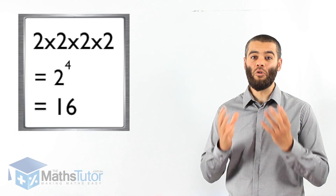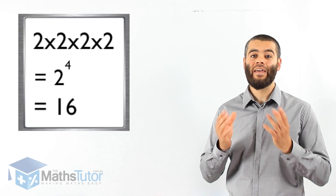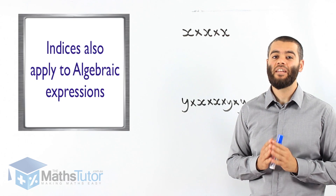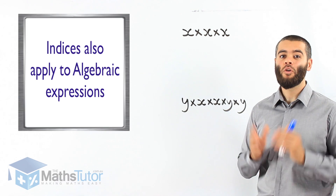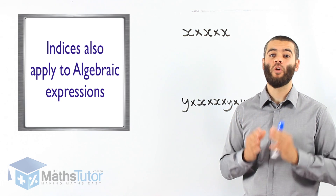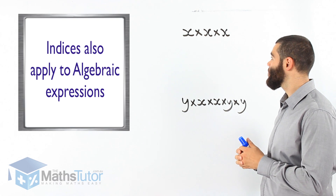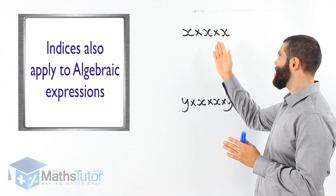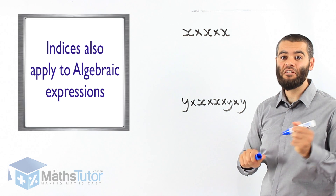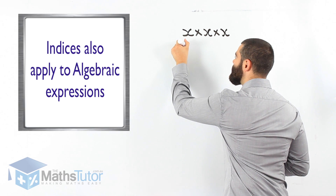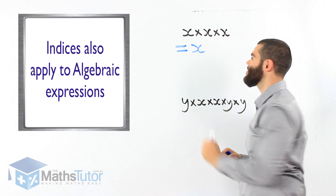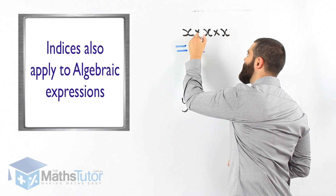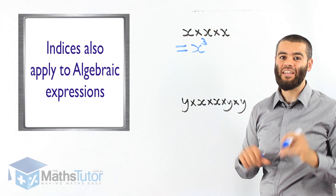Now let's do some examples that also involve algebra and pronumerals. We follow the same rules. Looking at this example: x times x times x. We are going to simplify it, writing it in index form using powers. x is our base, and how many times? 1, 2, 3 — x times itself 3 times — x to the power of 3. That easy.